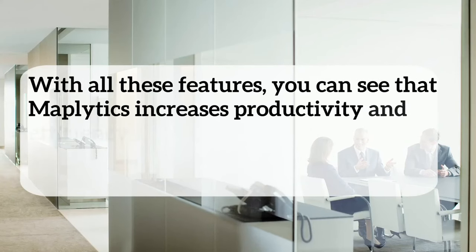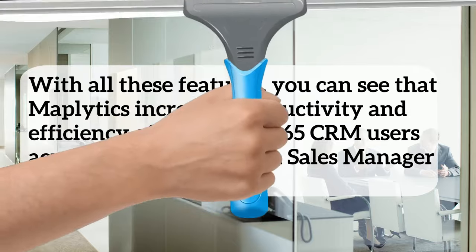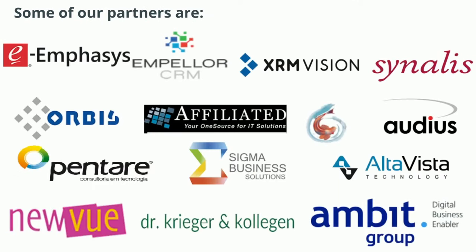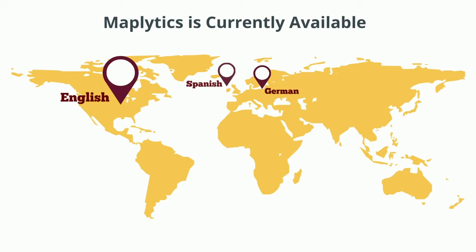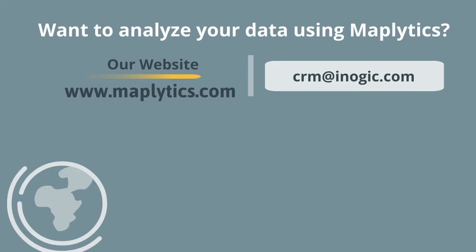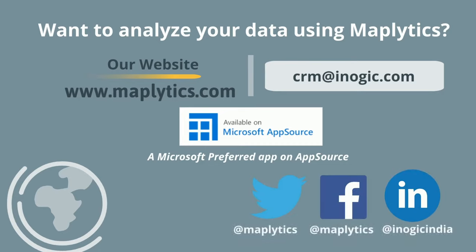With all of these features, you can see that Maplytics increases productivity and efficiency of Dynamics 365 CRM users across various roles, from sales manager to sales rep. Maplytics is one of the most popular apps for geoanalytics, with partners and customers spread across the globe. Maplytics is currently available in seven different languages: English, German, Spanish, Portuguese, French, Turkish, and Arabic. Want to analyze your data using Maplytics? Visit our website for a free trial or contact us at CRM@inogic.com for a one-on-one demo. You can also download Maplytics from Microsoft AppSource.